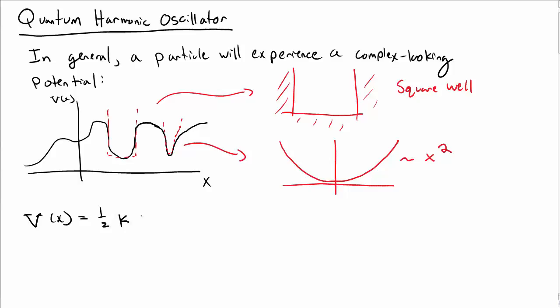So we would say near the bottom of that well, the potential looks something like x squared, let's say one half kx squared. That's nice because in classical physics the force is minus the derivative of the potential with respect to x, which would be minus kx, but that's just the force of a spring force. That's why we call this the harmonic oscillator.